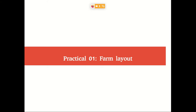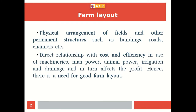We are going to see about farm layout. Different forms have different layouts. Farm layout means the physical arrangement of fields and other permanent structures such as buildings, roads, channels, and storage houses. When we plan the physical arrangement well, it will reduce our cost. When the field is nearer to the storage house, we can easily harvest the products and store them.